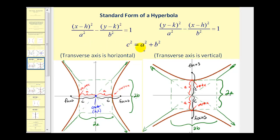Once we find a, b, and c, we start by locating the center at coordinates h, k. For a horizontal transverse axis, we add and subtract a to the x coordinate to find the vertices, and add and subtract c to the x coordinate to find the foci. Notice the rectangle between the two pieces of the hyperbola with dimensions 2a by 2b — the lines through the diagonals of this rectangle will be the asymptotes. For a vertical transverse axis, we add and subtract a and c to the y coordinate instead.